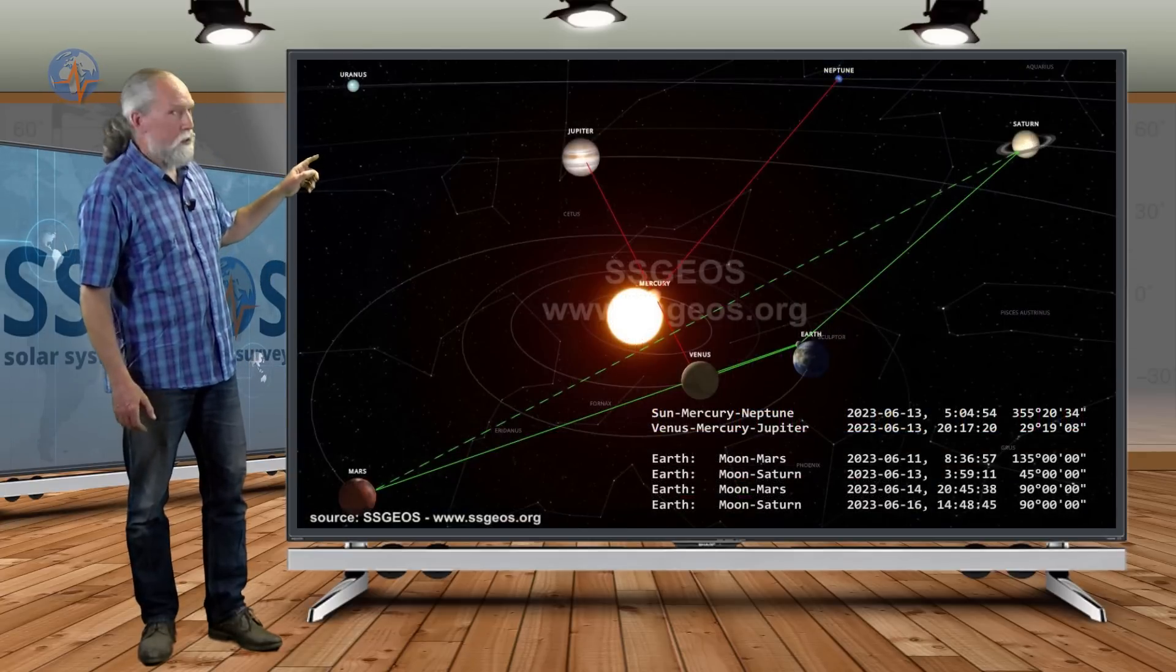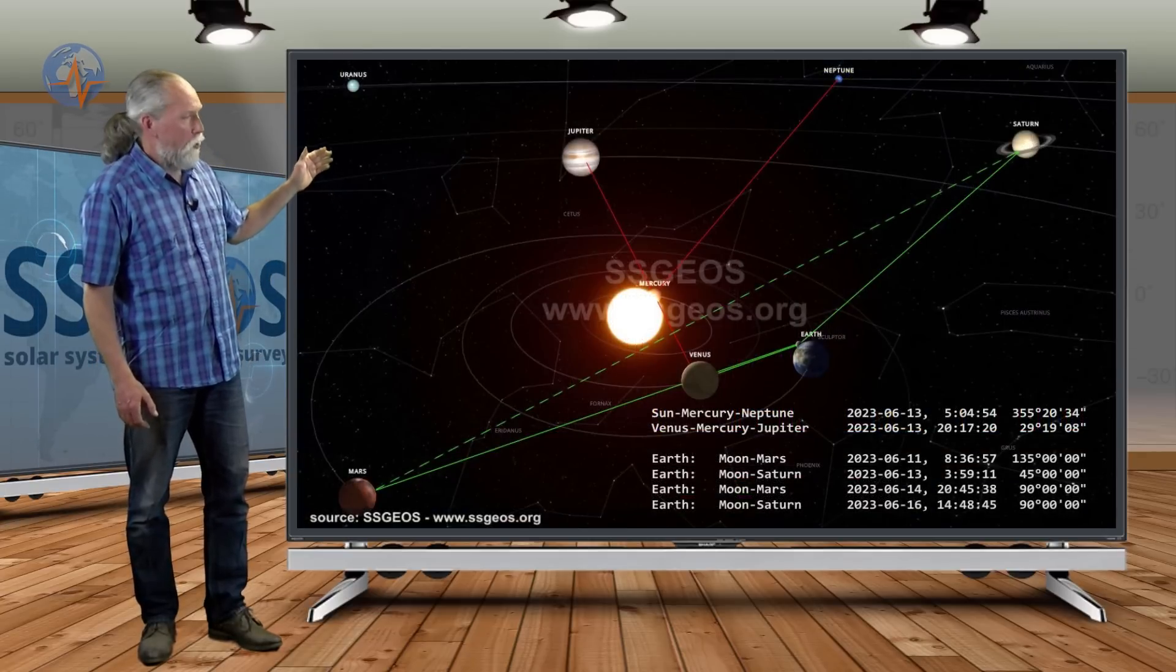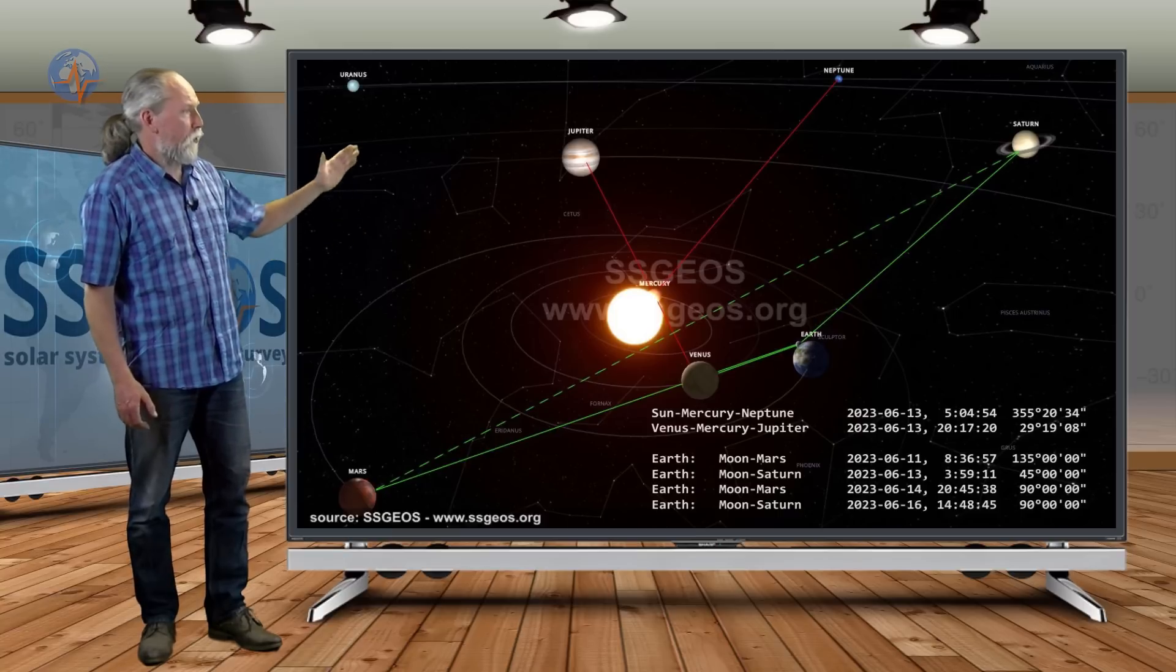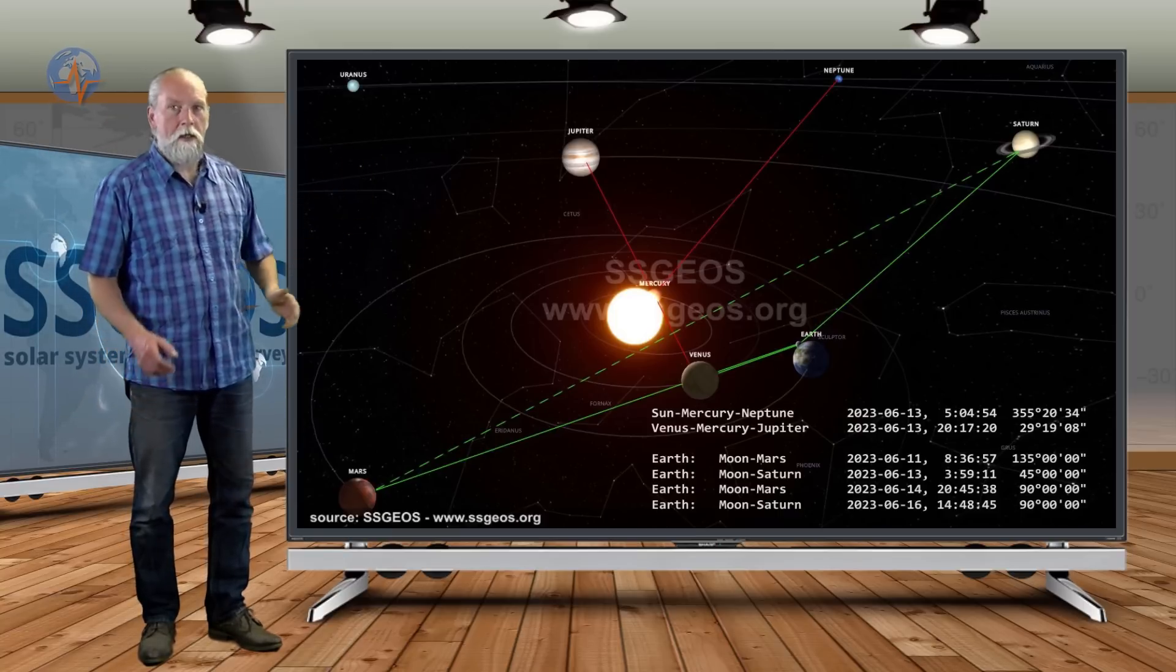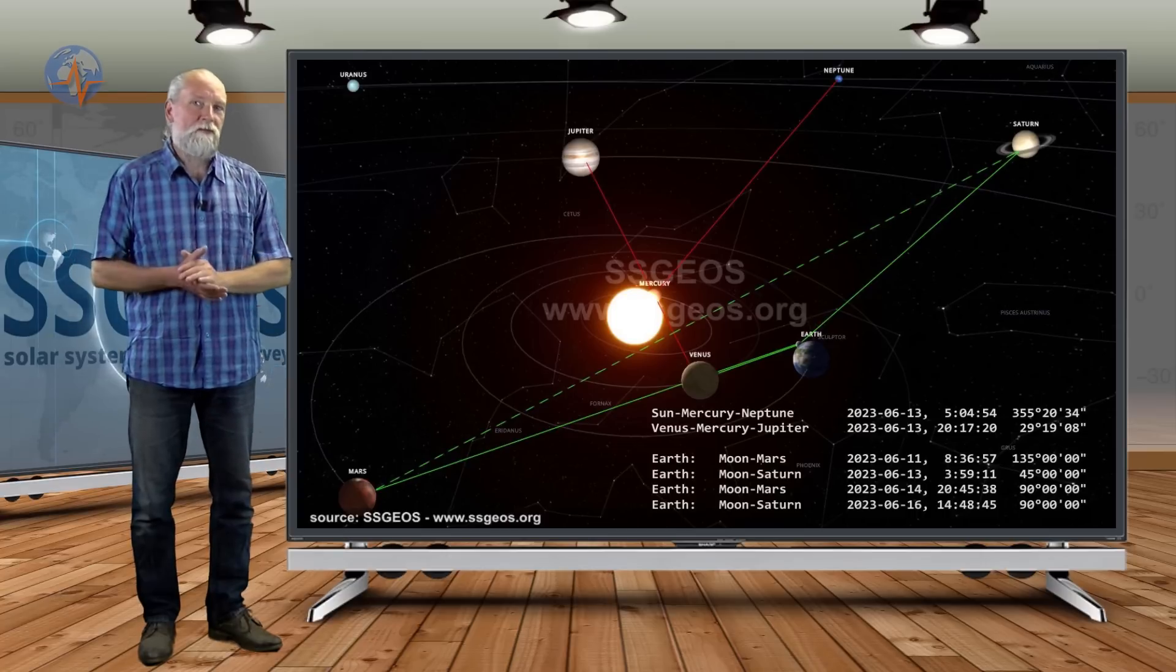In the solar system we see this critical geometry marked by the red lines. Sun, Mercury, Neptune and also Venus, Mercury, Jupiter. They basically occur at the same time. There are only several hours in between.